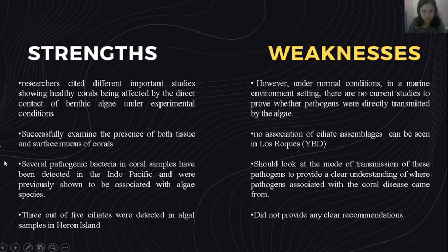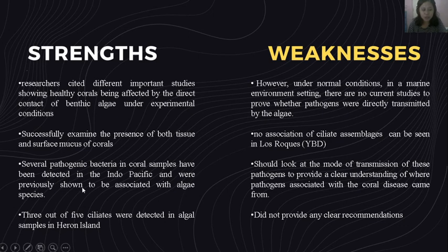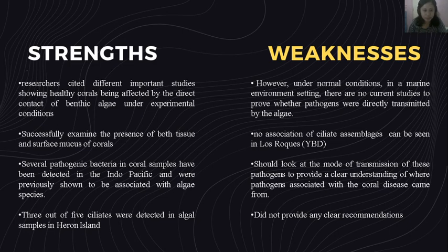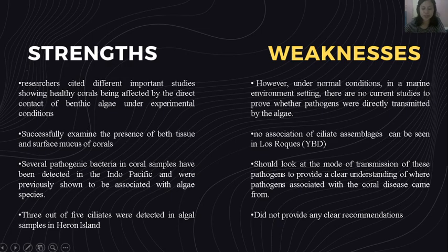Several pathogenic bacteria in coral samples were detected in both the Pacific and were previously shown to be associated with algal species. Three out of five ciliates were detected in algal samples in Heron Island. A weakness is the lack of association found in YBD ciliate assemblages in Los Roques. The authors need to examine the mode of transmission of these pathogens to provide a clearer understanding of where pathogens associated with coral disease came from. The article also did not provide any clear recommendations.